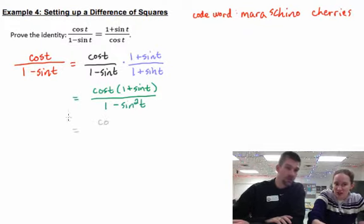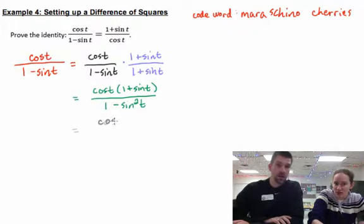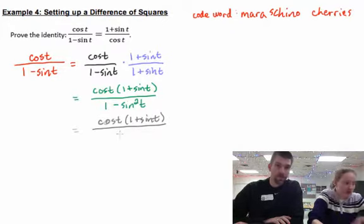So let's leave... Oh, switch colors. Danger. Cosine t... 1 + sin t... Yeah, don't do that yet. Don't distribute. Don't distribute yet, until you have to. Right. 1 - sin²t.